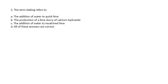Question 2: The term slaking refers to the addition of water to quicklime, the production of a lime slurry of calcium hydroxide, or the addition of water to reclined lime. All of the answers are correct.